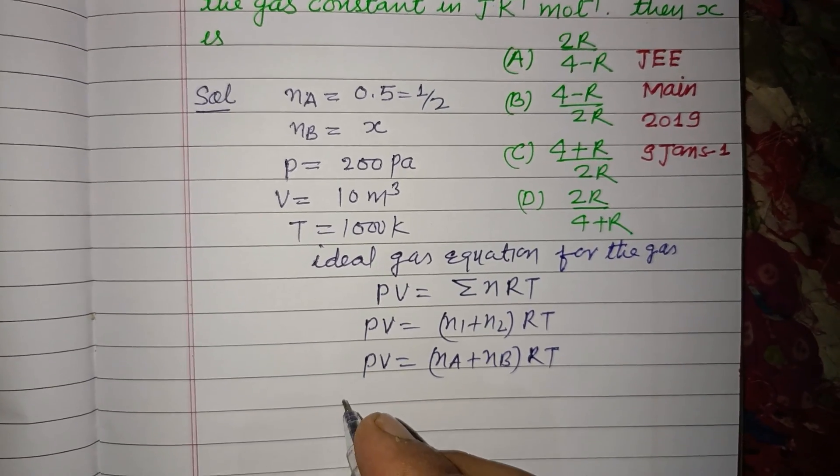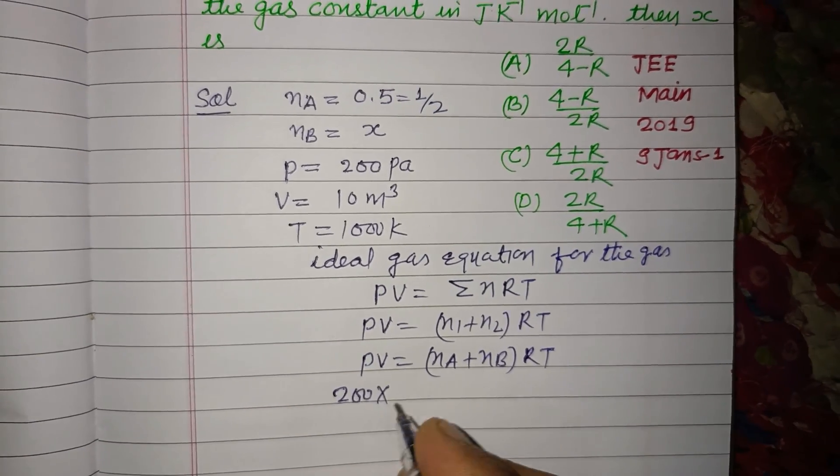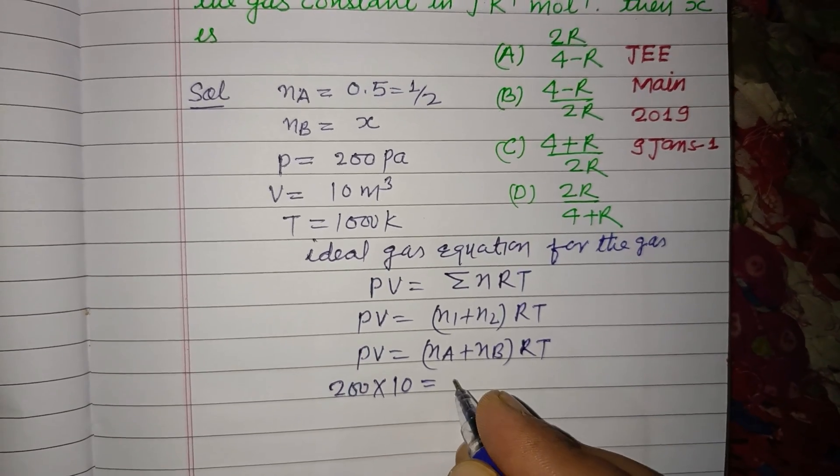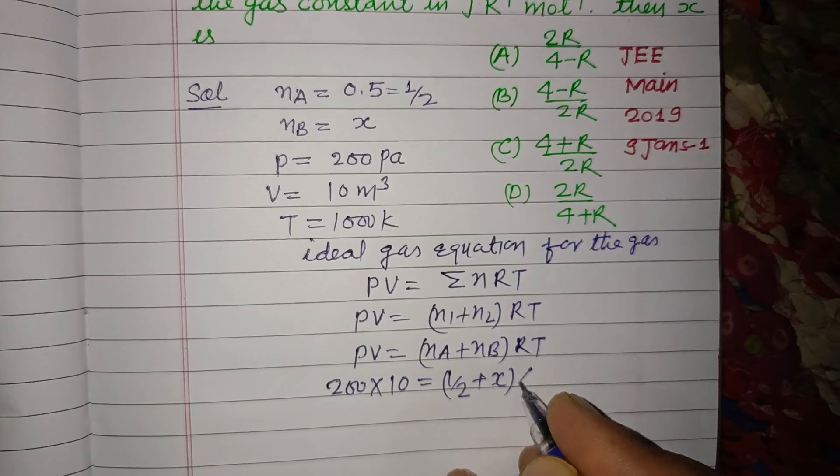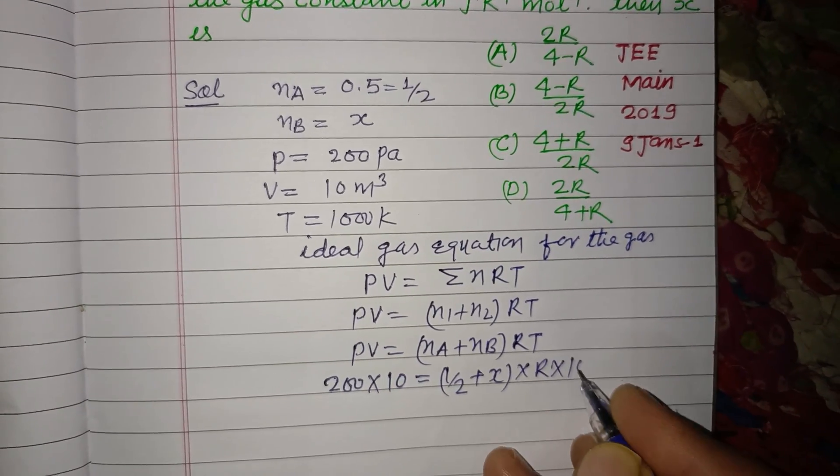Now putting the values: 200 times 10 equals (1/2 plus x) times R times 1000.